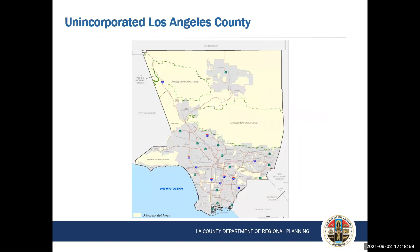The Department of Regional Planning provides the land use planning services for the unincorporated areas of Los Angeles County. These unincorporated areas comprise 64% of the county's total land area, which spans from the mountains to the beaches to the deserts and the inland valleys. The unincorporated areas are shown in yellow in this map of Los Angeles County. Unincorporated areas do not have their own city charter, so their local government is the county of Los Angeles. There are about 1 million people who live in the unincorporated areas. Examples of unincorporated communities include East Los Angeles, Florence Firestone, and Lenox.